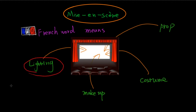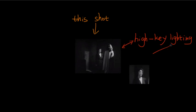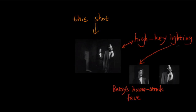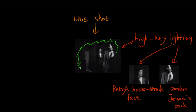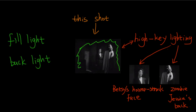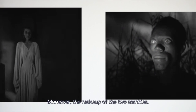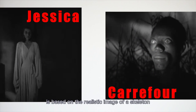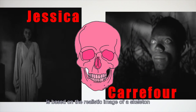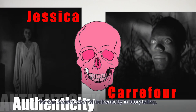The lighting in 'I Walked with a Zombie' is fairly important to shape a horror atmosphere based on its genre. Like this shot, the high-key lighting illuminates Bessie's horror-struck face and zombie Jessica's body. Various shadows are not filled by the full light and the backlight, making the environment of this shot fairly dark and horrible. Moreover, the makeup of the two zombies, Jessica and Carrefour, is based on a realistic image of a skeleton for the construction of authenticity in storytelling.